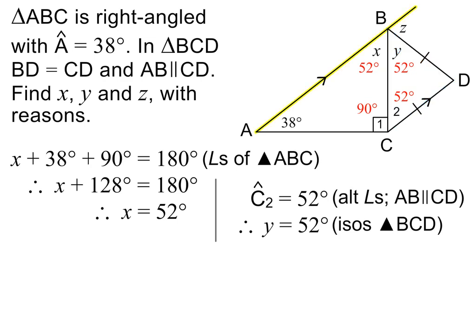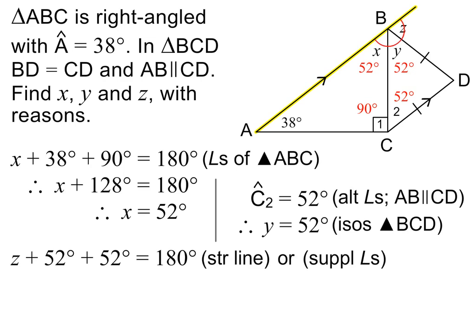And lastly, to find z, we need to use the fact that we have a straight line here. This means that z plus 52 degrees plus 52 degrees equals 180 degrees. The reason is angles on a straight line, or supplementary angles. To solve the equation, we begin by adding 52 degrees and 52 degrees on the left. We then subtract 104 degrees from both sides. z is therefore equal to 76 degrees. This completes the lesson. Good luck with the test.